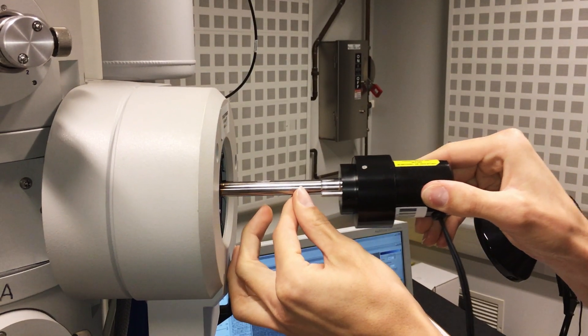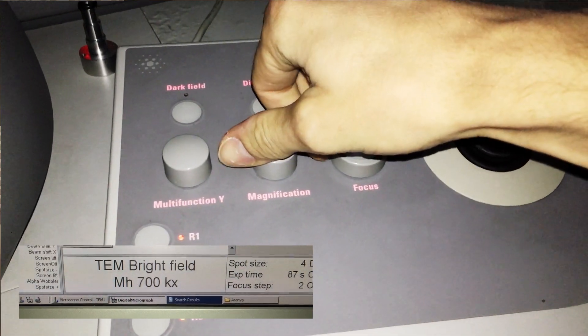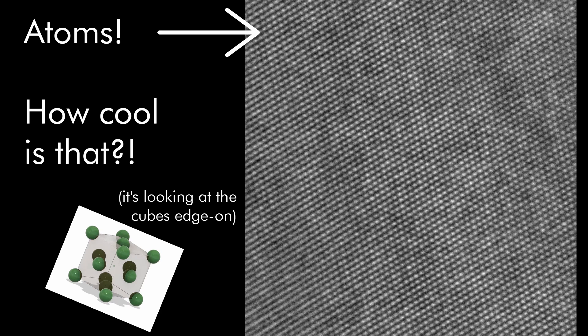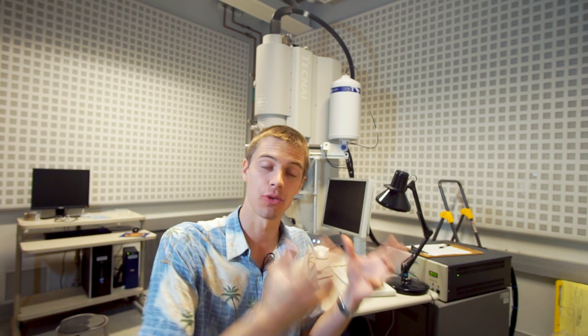If we load in a tiny speck of material and zoom in about a million times magnification, we can see that the atoms are forming this perfect tiny grid structure. So those are actual atoms that we can see coming together and forming this pattern to make a crystal lattice.